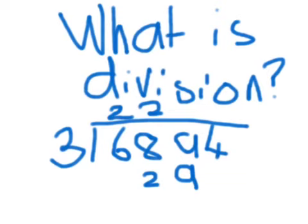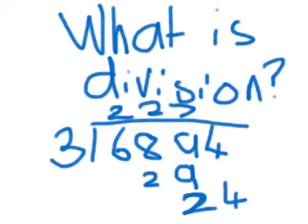3 goes into 29 seven times with a remainder of 2. So you put the 2 down there and bring the 4 down. 3 goes into 24 eight times, so your answer is 2,278.